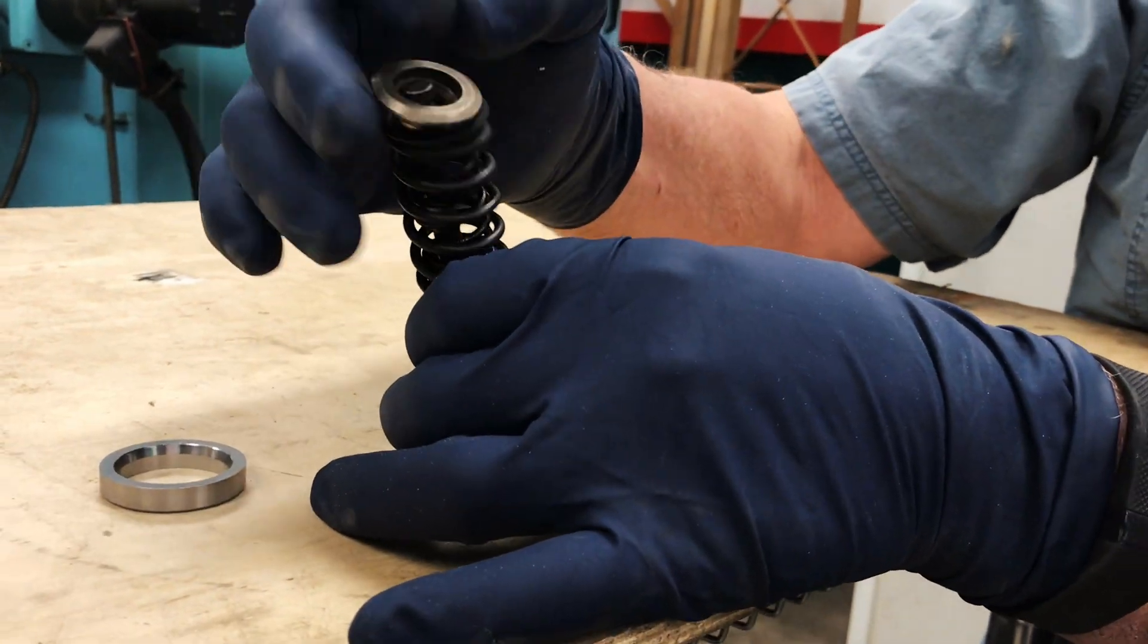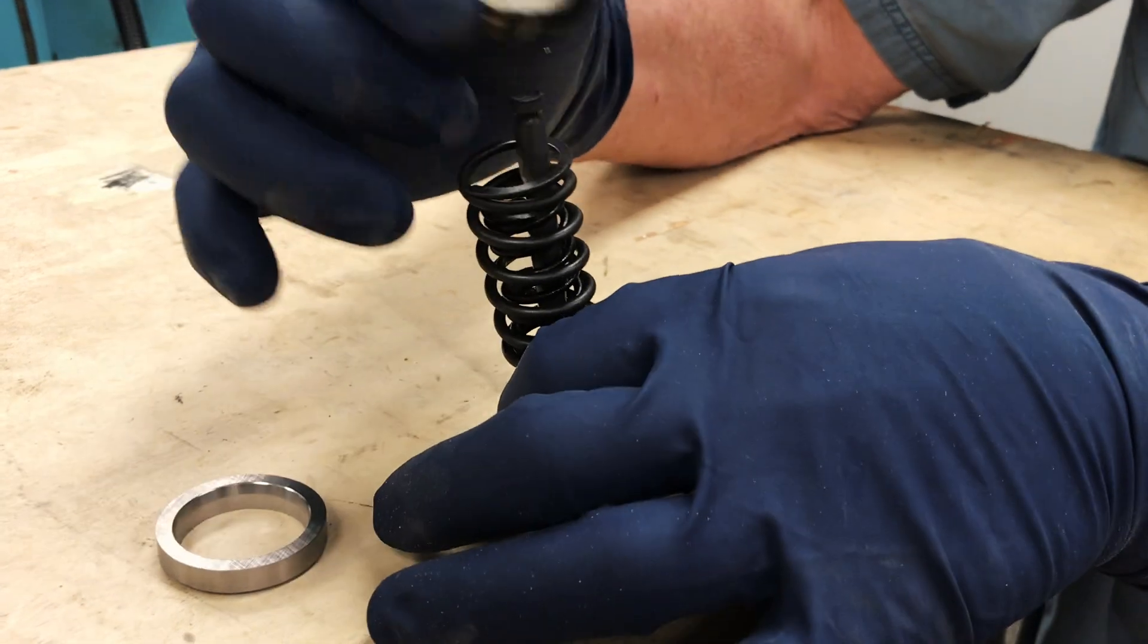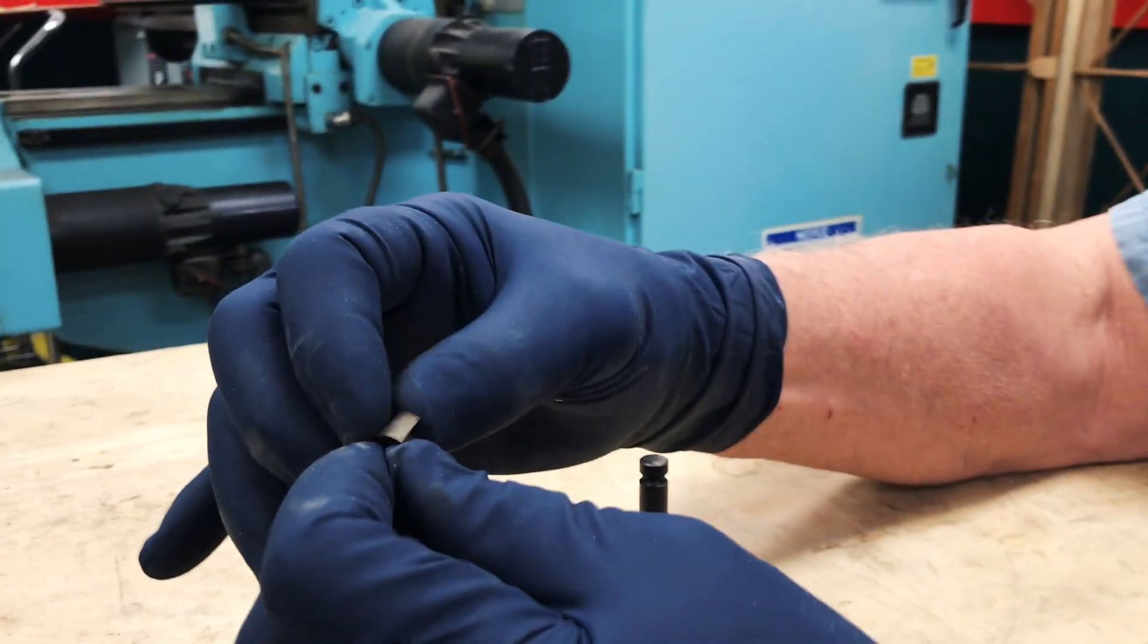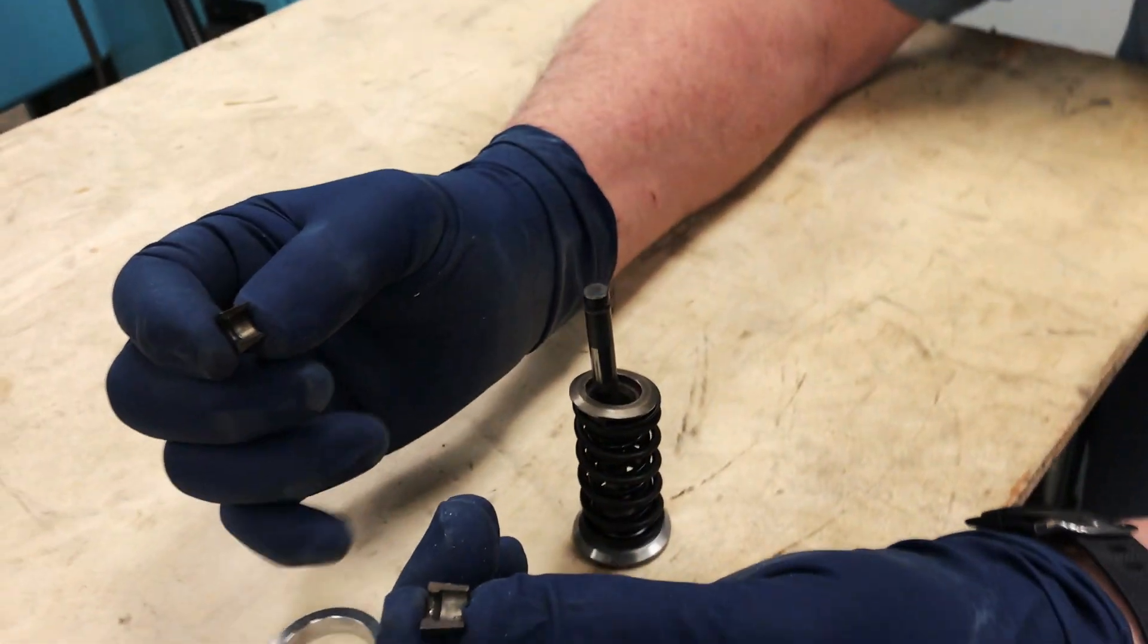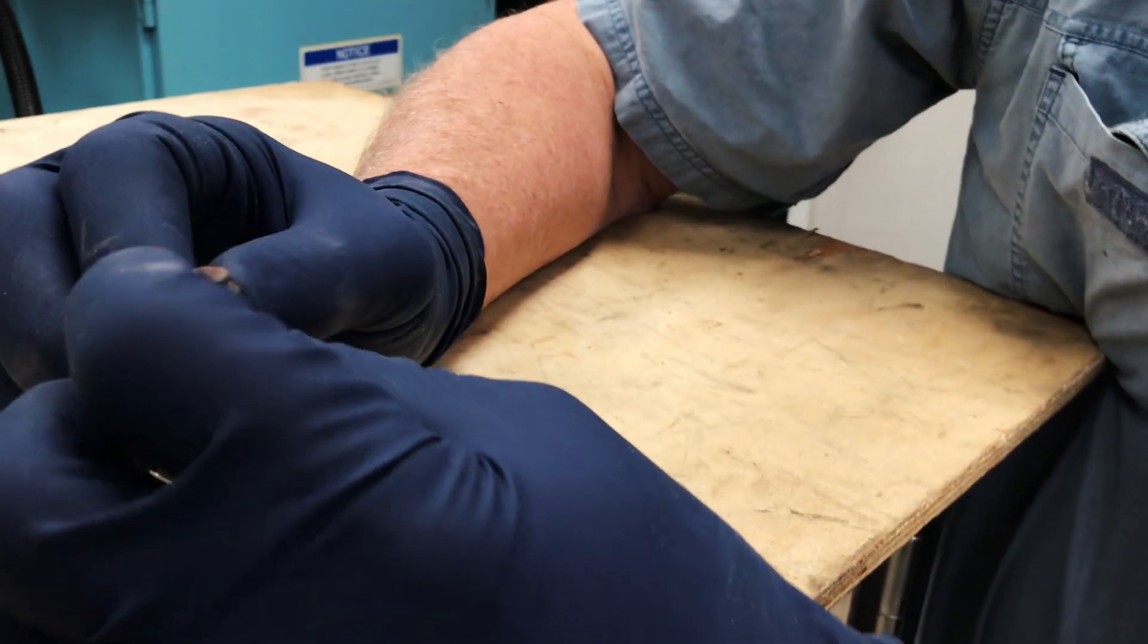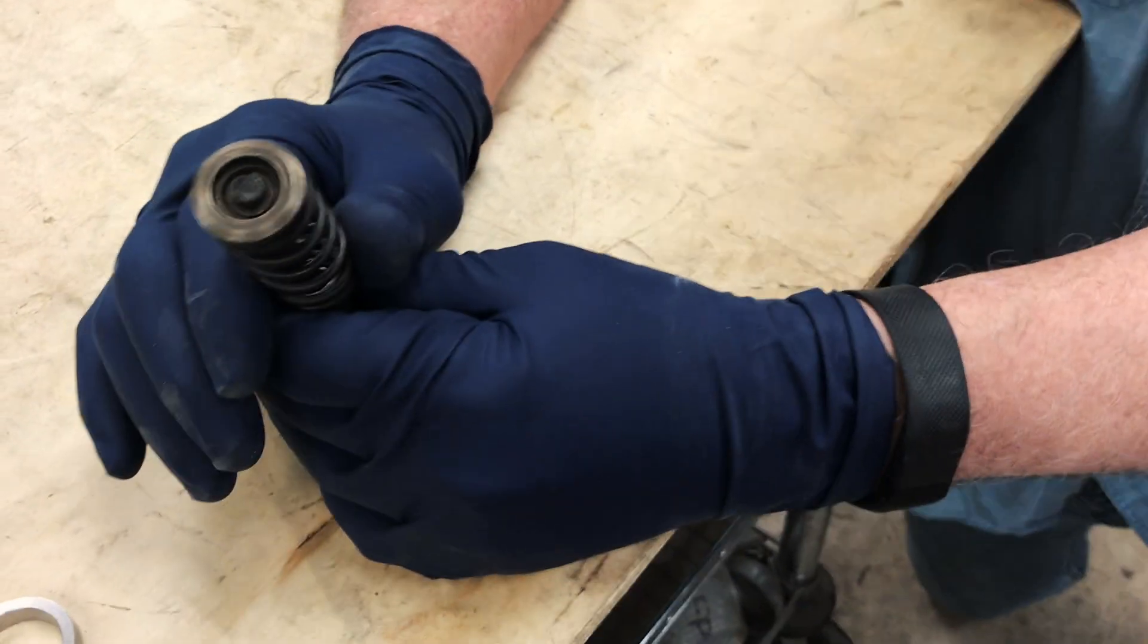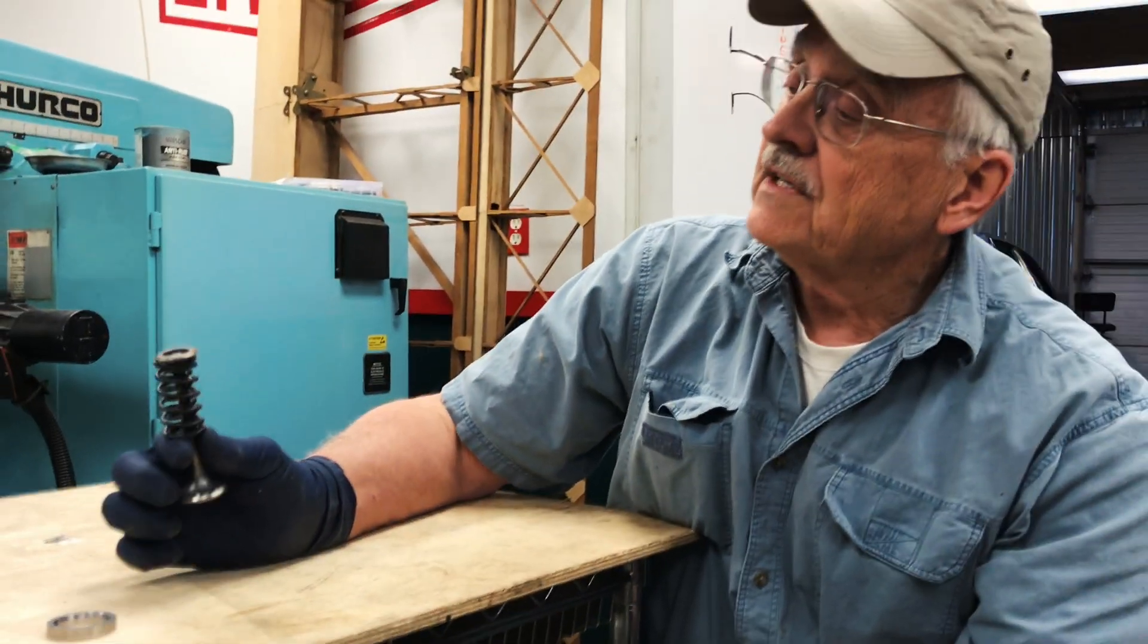The spring is held on by something called a retainer. If you look carefully at the retainer, you can see that in the middle there is a tapered surface. That tapered surface is where these little things—the keepers—live. The keepers together form a conical structure. There's a ridge around the inside that fits in that groove in the valve stem. You can see that cone shape fits into the valve spring retainer. That's how the valve springs are retained on the end of the stem.